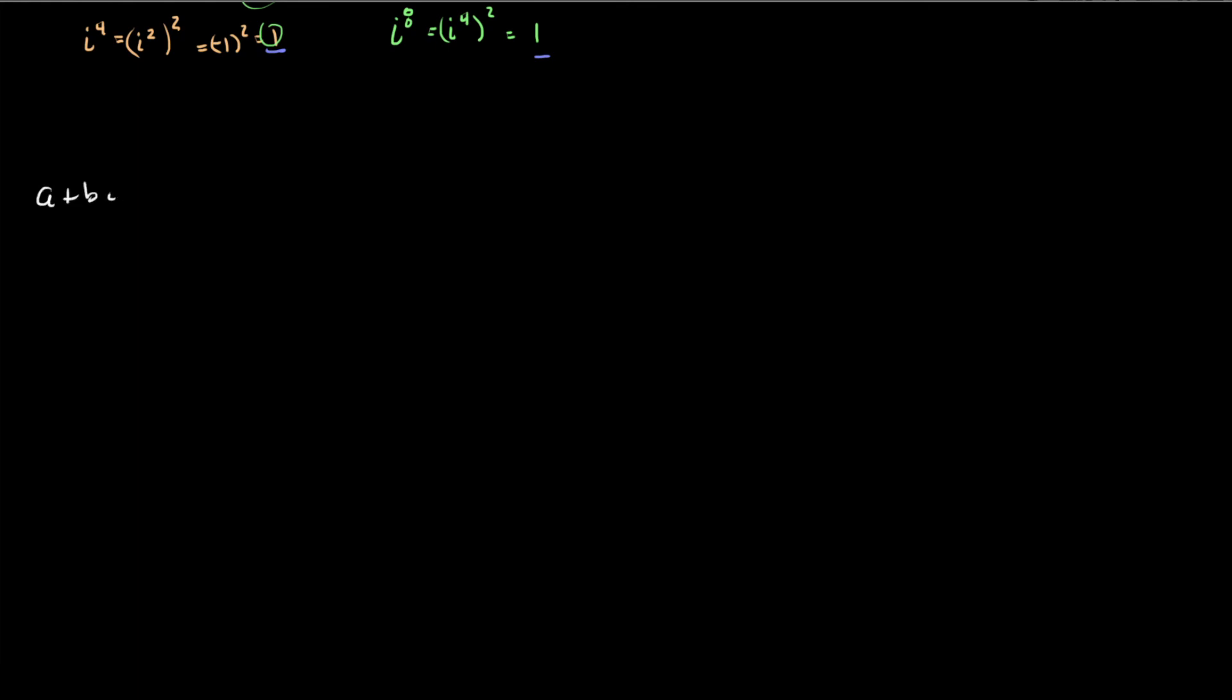So, we have equality in complex numbers. A plus B i equals C plus D i. Two complex numbers are equal if and only if A is equal to C and B is equal to D. So if I want to show that two imaginary numbers are equal, I just have to simply show that the real components are equal and the imaginary components are equal. And that's good enough.